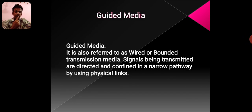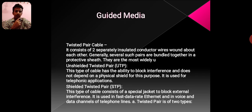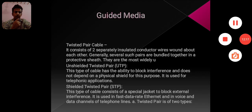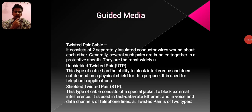Guided Media. Guided media is also referred to as wired or bounded transmission media. Signals being transmitted are directed and confined in a narrow pathway using physical links. Twisted Pair Cable consists of two separately insulated conductor wires wound about each other. UTP (Unshielded Twisted Pair) cable has the ability to block interference and does not depend on a physical shield for this purpose. It is used for telephonic applications.